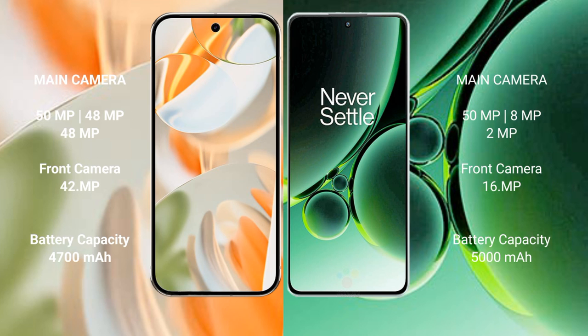Google Pixel 9 Pro features a rear triple camera setup: 50MP plus 48MP plus 48MP, and a 42MP front camera. OnePlus Nord 3 features a rear triple camera setup: 50MP plus 8MP plus 2MP, and a 16MP front camera.